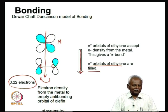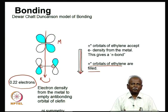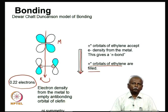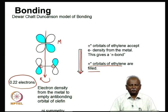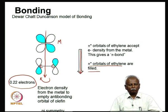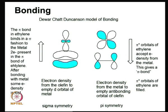The Dewar-Chatt-Duncanson model promotes a synergistic interaction between the metal and the olefin. Both interactions are pictured together — one has sigma symmetry and the other has pi symmetry. Rotation does not break the sigma bond, whereas the pi bond is completely broken when you rotate the olefin. That is why there is a small barrier for the rotation of an olefin. This barrier can be illustrated in the Zeiss complex: if the three chlorines around the platinum are in the xy plane, then the ethylene carbon-carbon axis is parallel to the z axis.